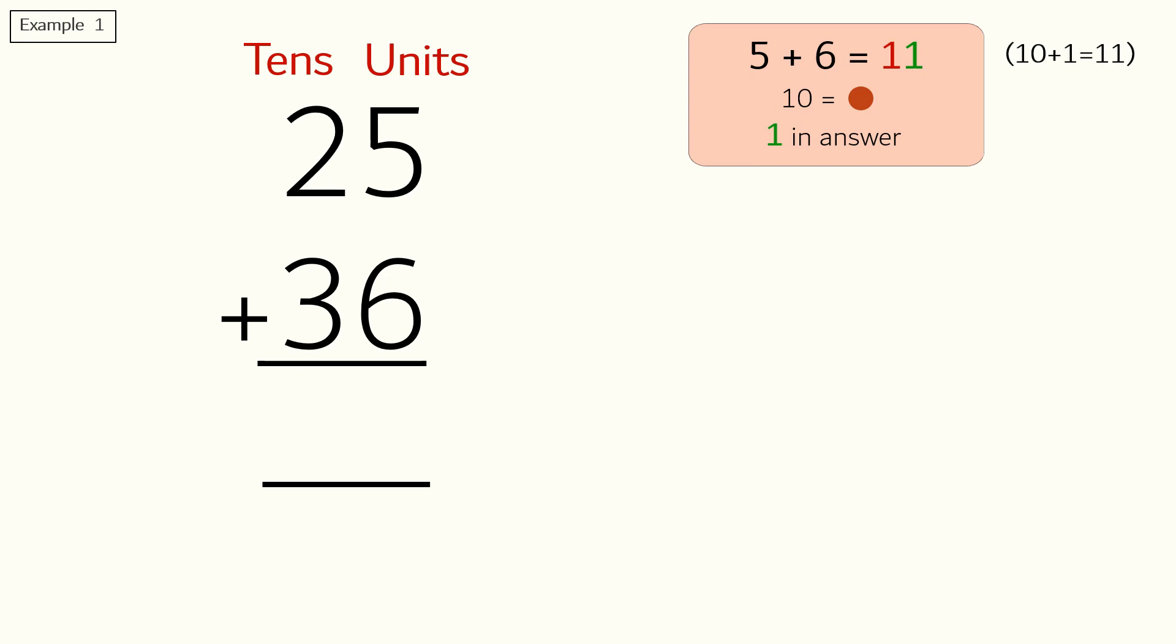Now eleven means ten plus one. Since dot is equal to ten, we will put a dot on top of three in the tens column. Now we are left with one from eleven. We will write that one in the answer section.